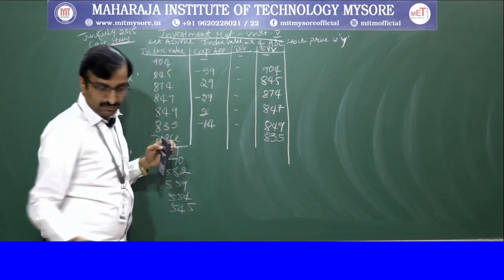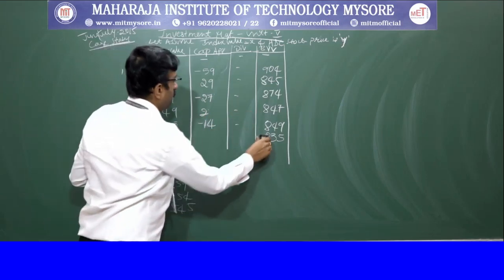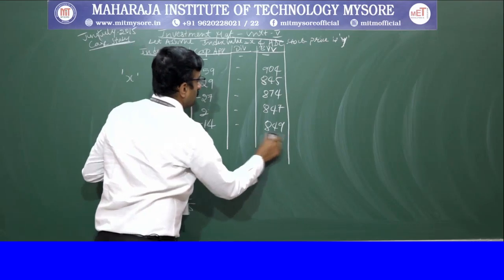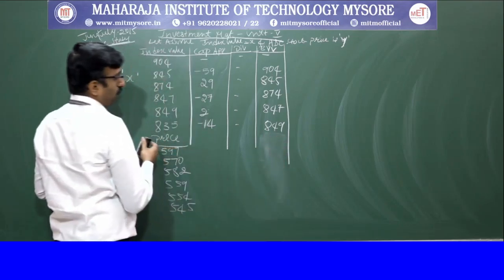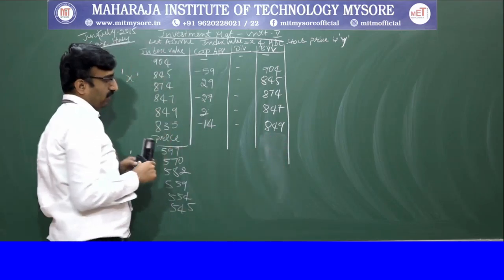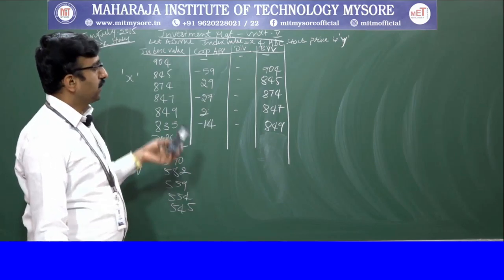Base year values for X: first year is nil, then 904, 845, 874, 847, 849. The last year value is not needed — we only have 5 base year values. So base year values are 904, 845, 874, 847, and 849.